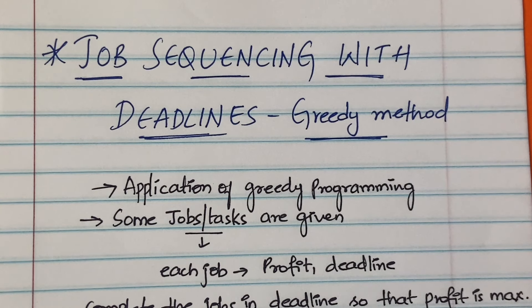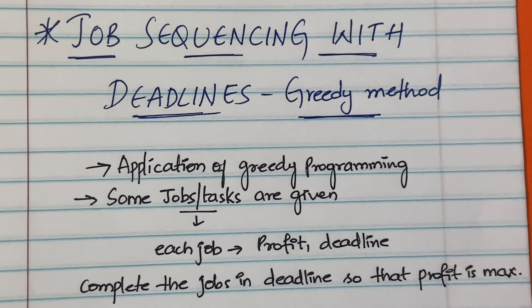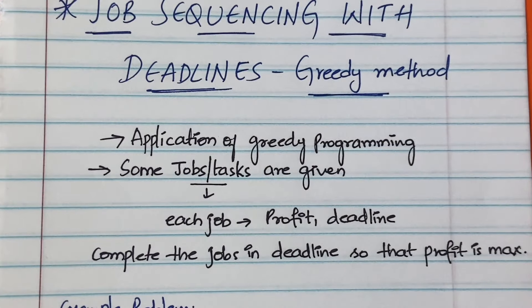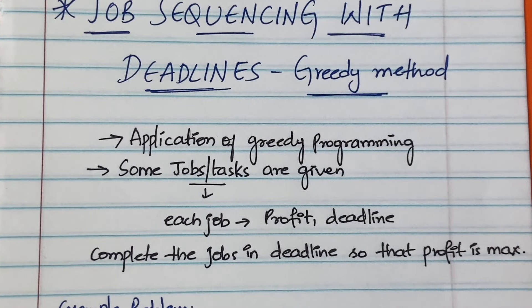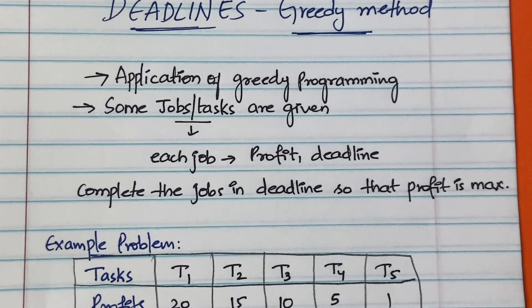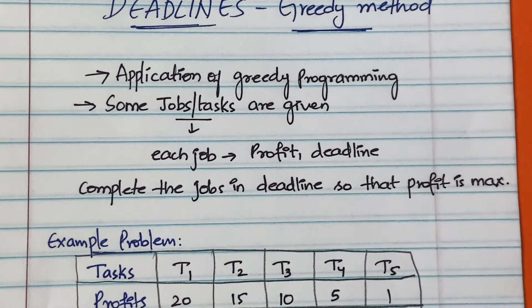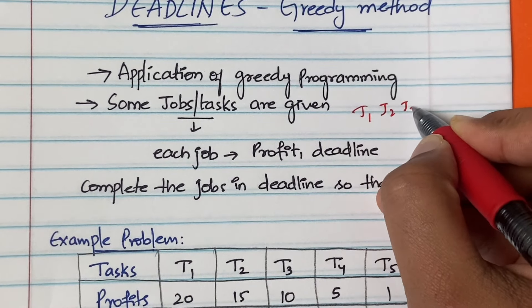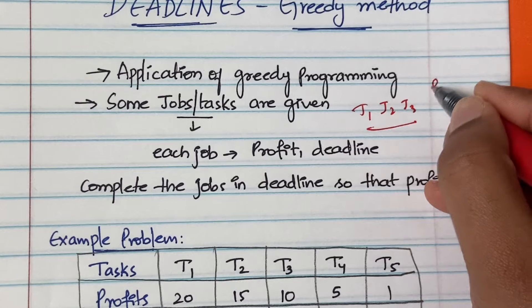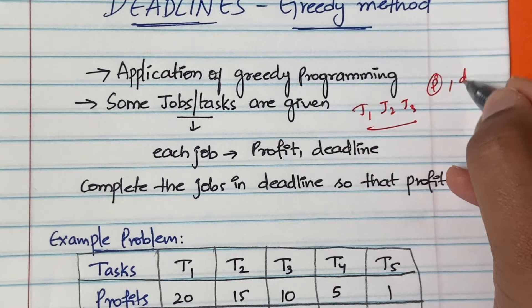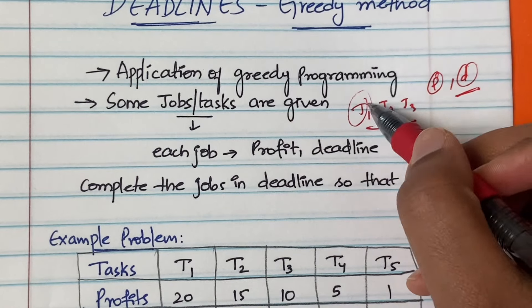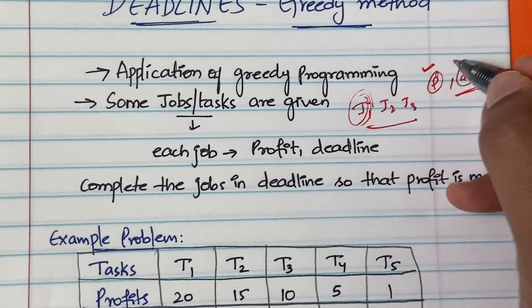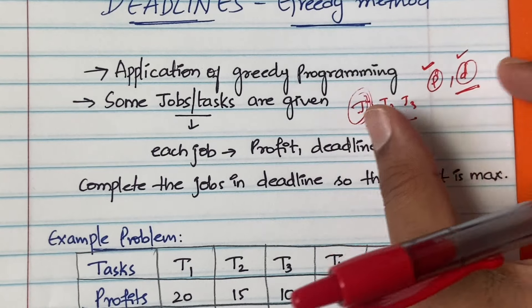We are going to see how the job sequencing with deadlines algorithm works using the concept of greedy programming. I'll discuss two examples in this video. Some n number of tasks will be given to you — for example j1, j2, j3 — and for each job you will have a profit and a deadline associated with it.